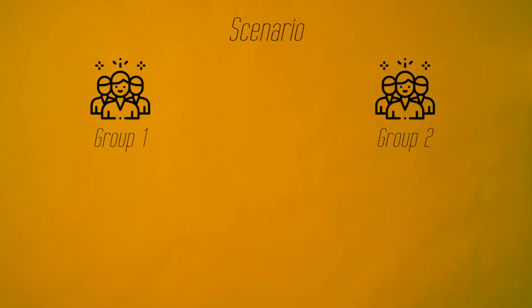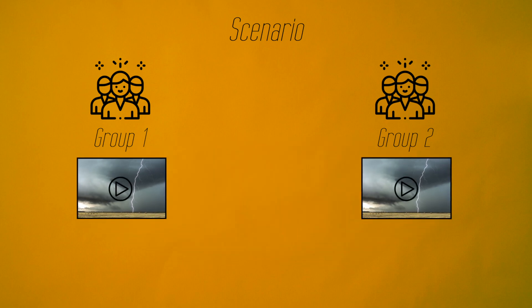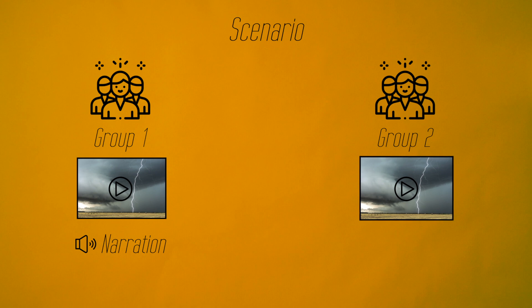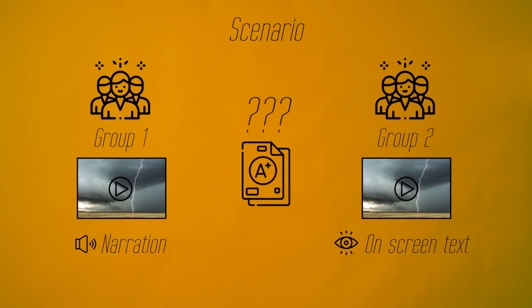You have two groups of students. Let's say you want to teach them about the formation of lightning. So you prepare two versions of the same short animation that explains everything. One version has the animation with narration, the other version has exactly the same animation but with on-screen text captions instead of the narration. You gave the first version of the animation to group one and the second animation to group two. Which group do you think would perform better?